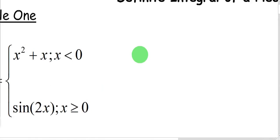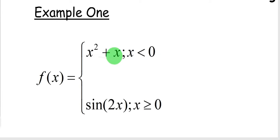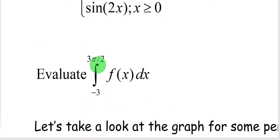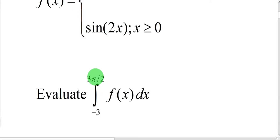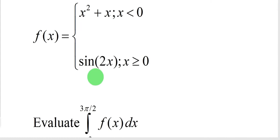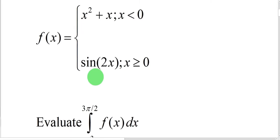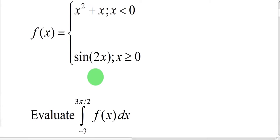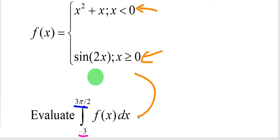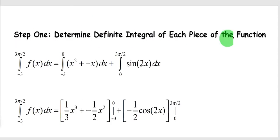The stopping point — the middle ground — is at 0. So you find the definite integral of the first function from negative 3 to 0, then the definite integral of the second function from 0 to 3π/2. Think of 0 as the in-between ground: you have your definite integral from negative 3 to 3π/2, but 0 is where the pieces meet in between.